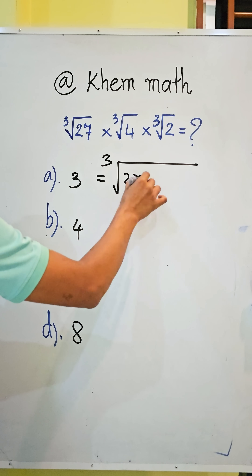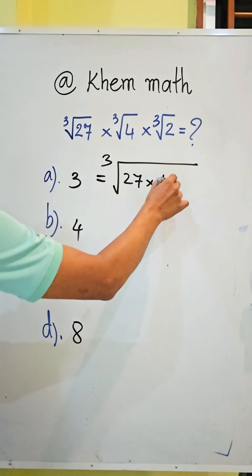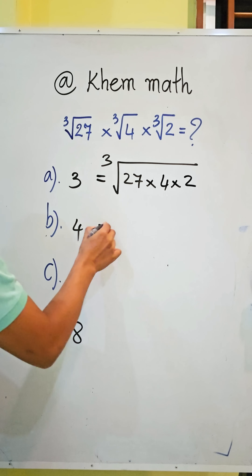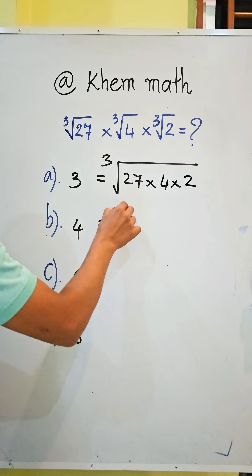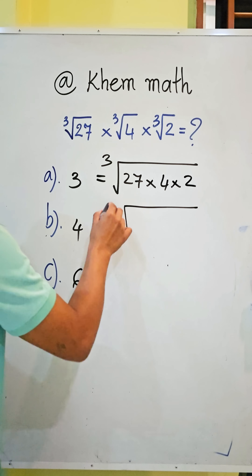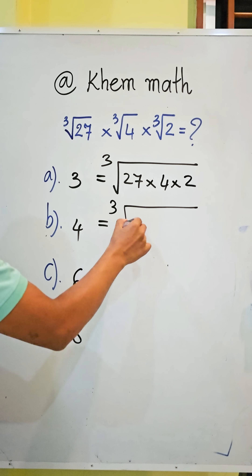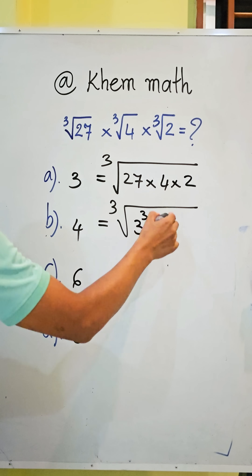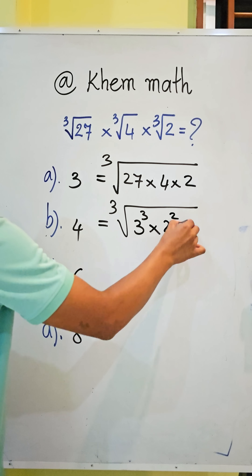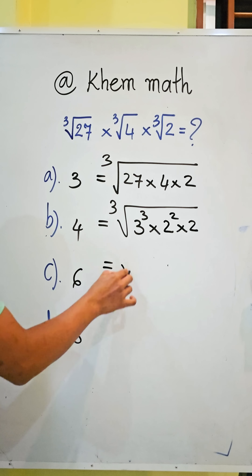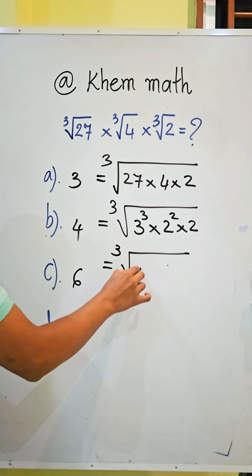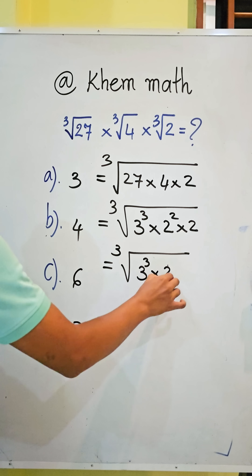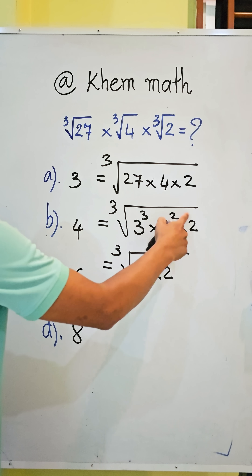...27 times 4 times 2. So it equals the cube root of 27 — which equals 3 to the power 3 — times 4, which equals 2 squared, times 2. So we have the cube root of 3 to the power 3, times 2 to the power 1, times 2 to the power 1.